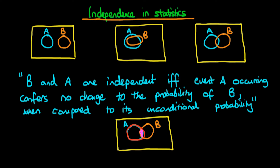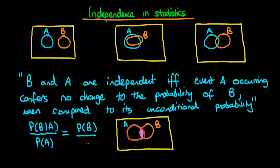Mathematically, we can write down this relationship: the probability of B occurring given that we're within A — that purple area — compared to the probability of A occurring, is in exactly the same ratio as the probability of B occurring divided by the area of the total state space, which is just an area of 1. This means that if we're in A, the probability of B occurring is exactly the same as its unconditional probability.